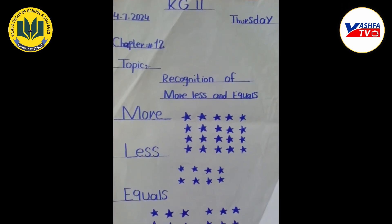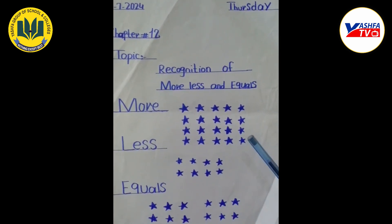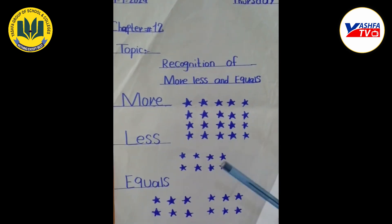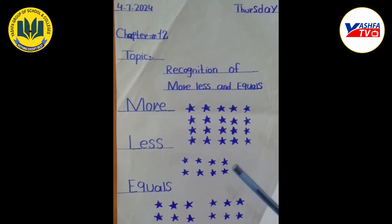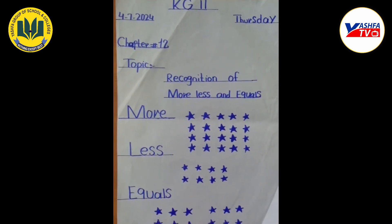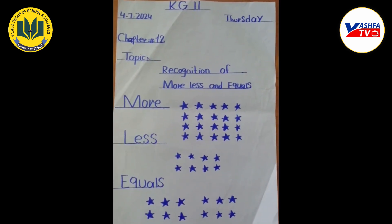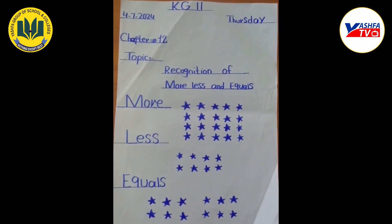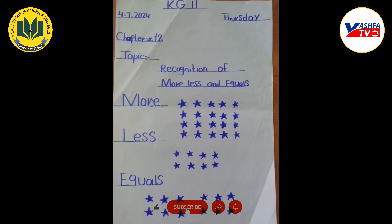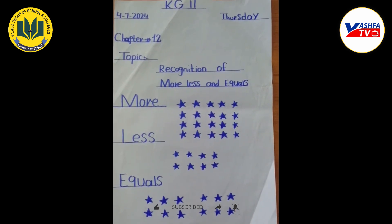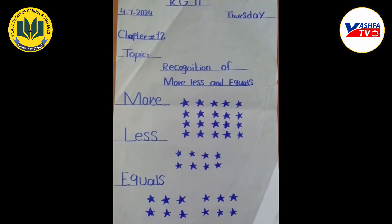More, less, and equals میں: more بولتے ہیں زیادہ کو، less بولتے ہیں کم کو، جبکہ equal بولتے ہیں برابر کو۔ جو چیز تعداد میں زیادہ ہوگی اسے ہم بولیں گے more، جو چیز تعداد میں کم ہوگی اسے بولیں گے less، اور جو چیز دونوں سائیڈ پہ ایک جیسی ہوگی اسے بولیں گے equal۔